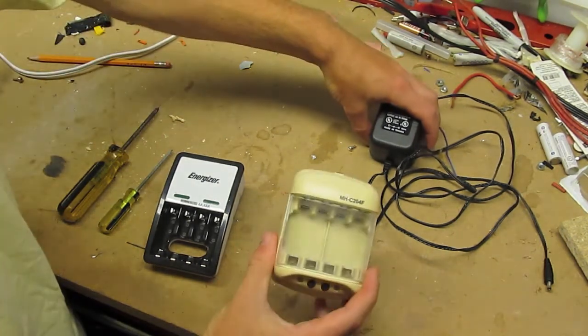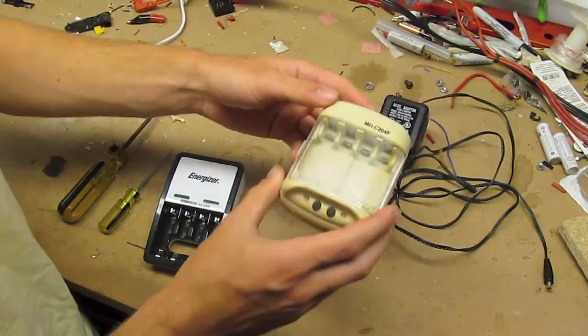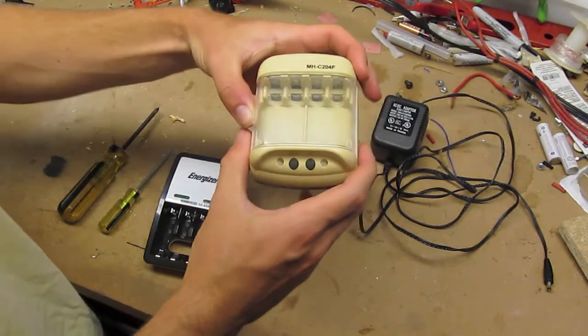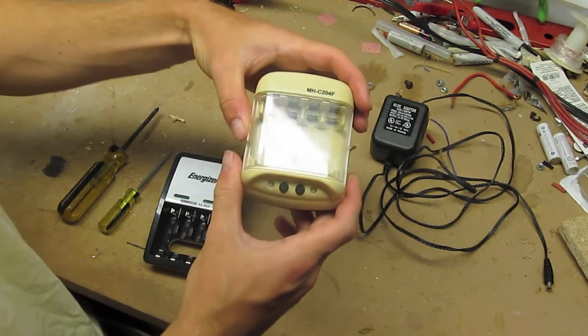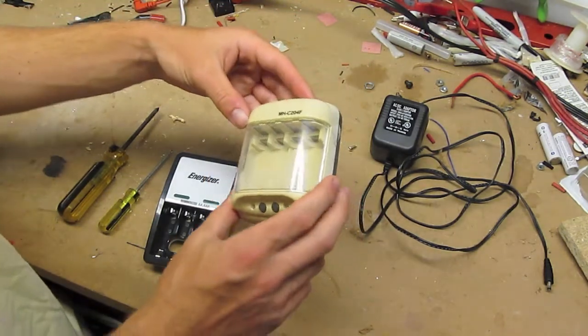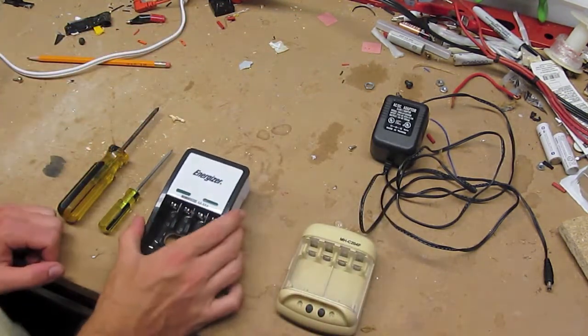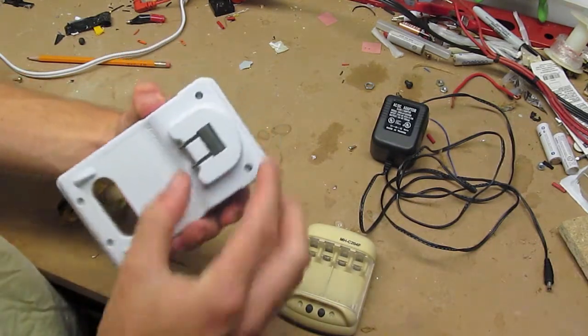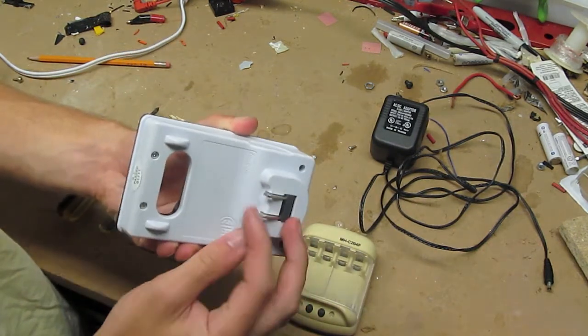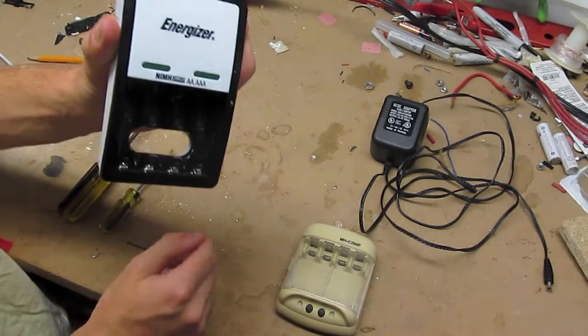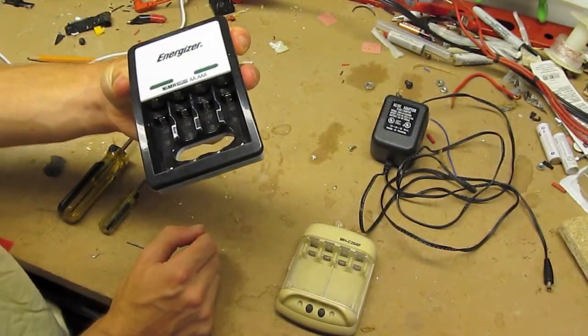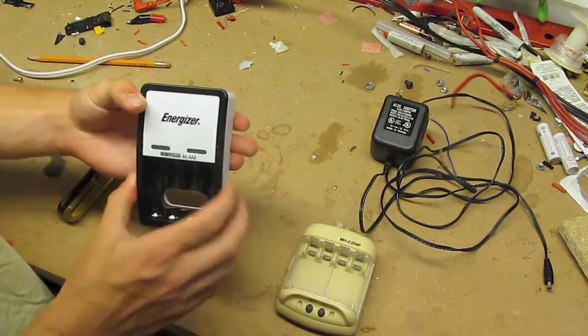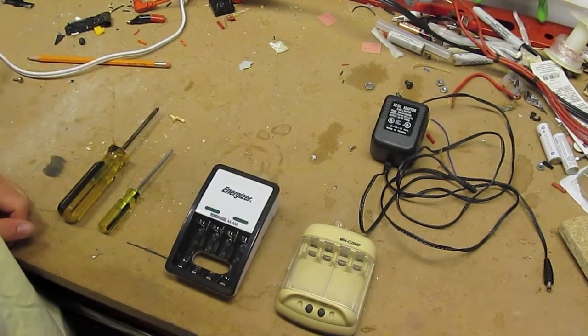We have this older unit meant to charge two sets of two AAA rechargeables or two sets of two AA rechargeables, nickel metal hydride, and then this newer compact unit with the power supply built in for charging again two sets of two AAA or AA. Gonna pop these things open, see what makes them tick.